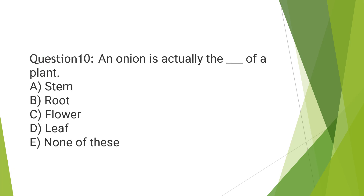Question 10: An onion is actually the dash of a plant. Option A, stem. Option B, root. Option C, flower. Option D, leaf. Option E, none of these. And the right answer is Option A, stem.